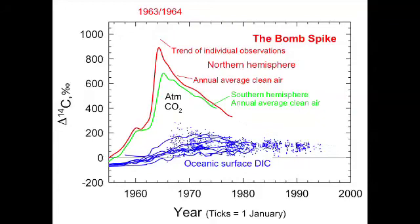The last thing I want to say about carbon-14 in the way of technical background is this point about the bomb spike. Atmospheric nuclear testing peaked at the end of 1963 and the beginning of 1964. It actually produced a carbon-14 signal in the atmosphere more than twice the defined modern level. And so atmospheric CO2 took this big spike upwards and has then been decaying downwards. These are actual measurements.